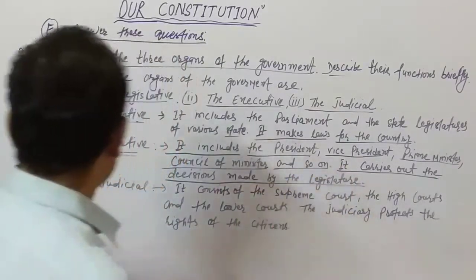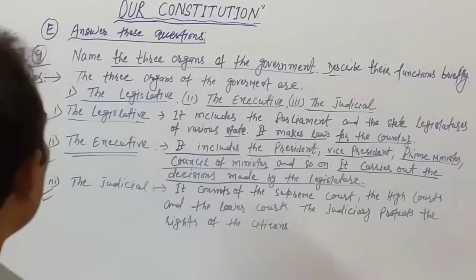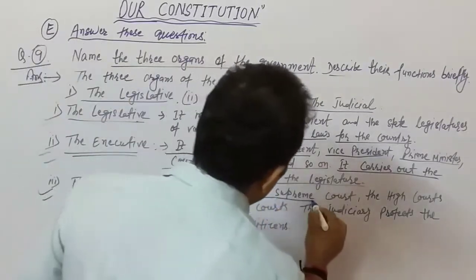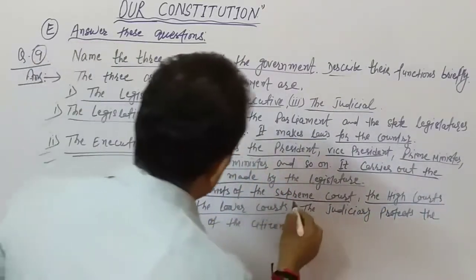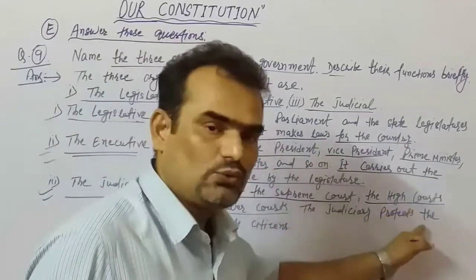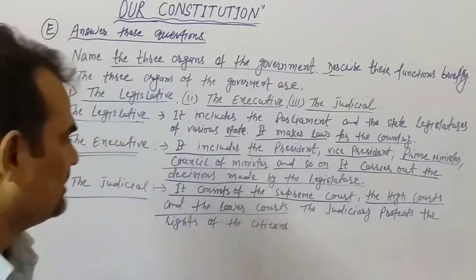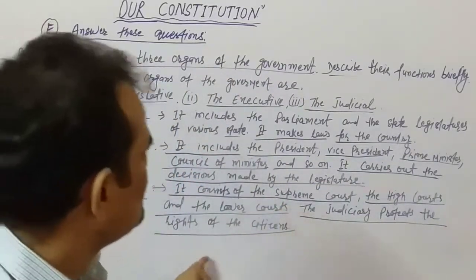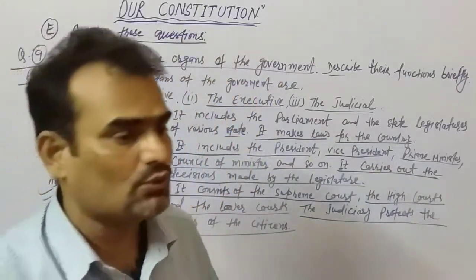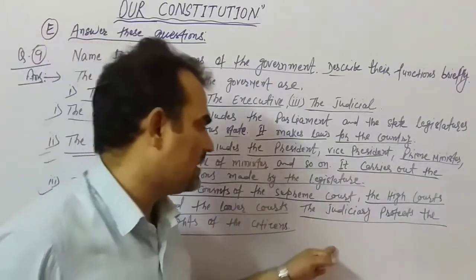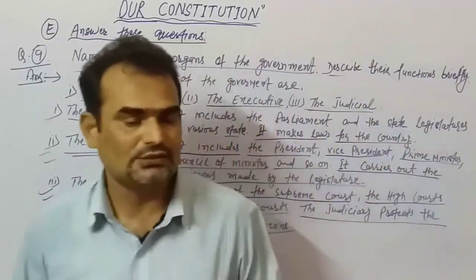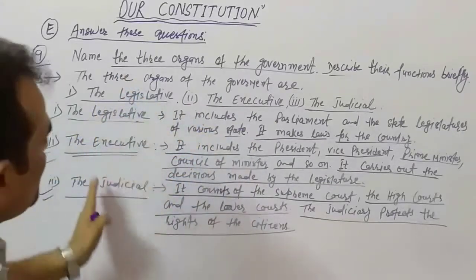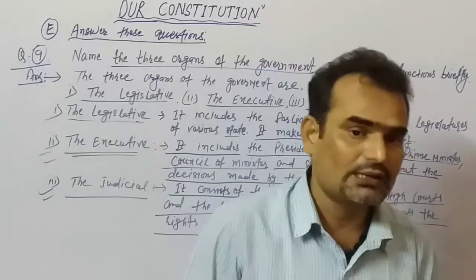The Judicial consists of the Supreme Court, the High Courts, and the lower courts. The judiciary protects the rights of the citizens. These are the three organs of the government — their names, their composition, and their work.